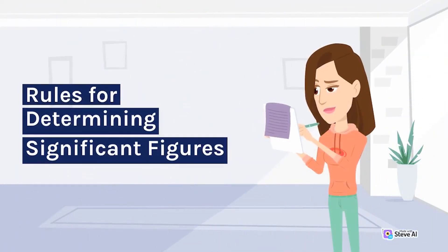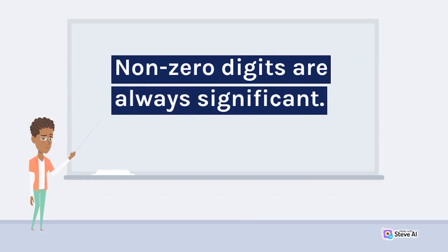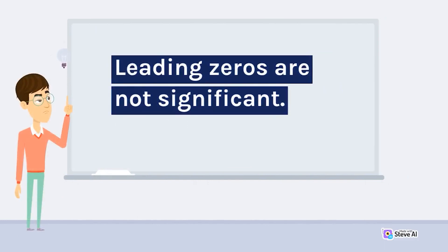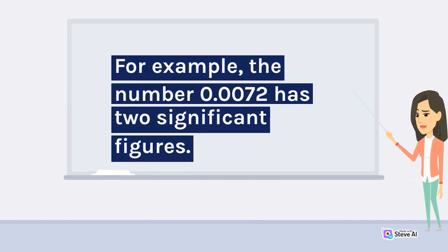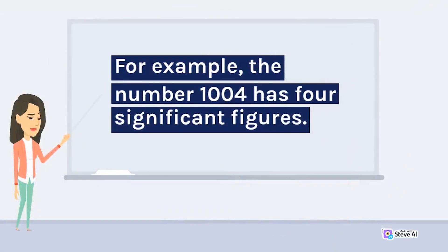Rules for Determining Significant Figures. There are specific rules for determining the number of significant figures in a number. Non-zero digits are always significant — for example, the number 321 has 3 significant figures. Leading zeros are not significant — for example, the number 0.0072 has 2 significant figures. Captive zeros are significant — for example, the number 1004 has 4 significant figures.